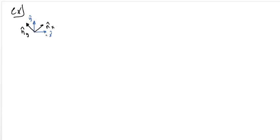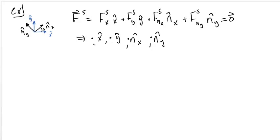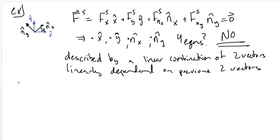Consider a planar system described by two axes: one X-hat and Y-hat, and another axis NX and NY rotated by some angle theta from the X axis. A resultant set of forces described with two bases could have force components along X, Y, NX, and NY. In equilibrium these all sum to zero. Would it be possible to dot with X-hat, Y-hat, NX, and NY to result in four different equations? The answer is no. Since this is a two-dimensional space, it can be described by a linear combination of two vectors, and any additional vectors are linearly dependent. Therefore there can be only two equations generated from the translational degrees of freedom.